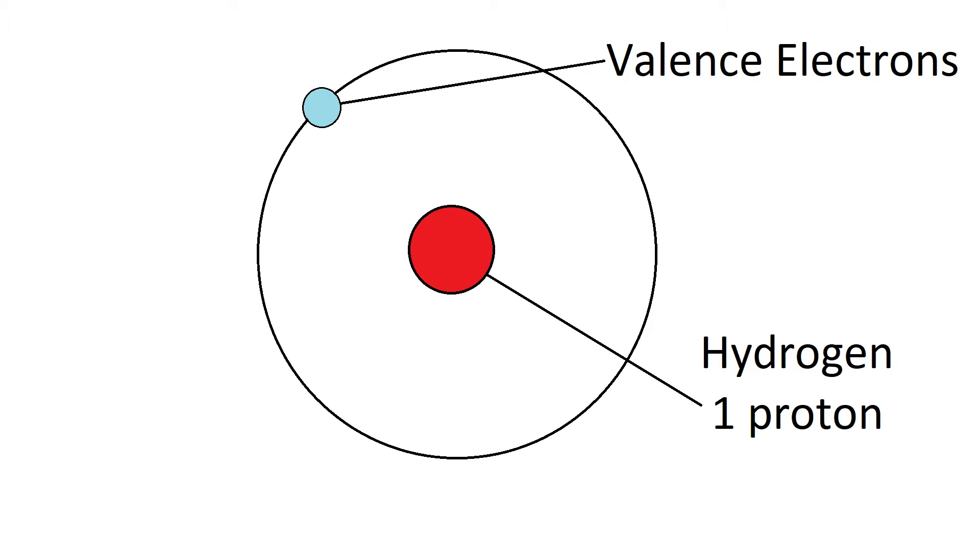Okay, so in this episode we're going to talk about covalent bonding. The first thing you need to know about covalent bonding is you need to learn about valence electrons and how that deals with electronegativity.